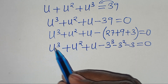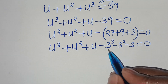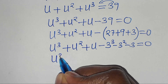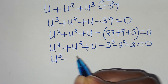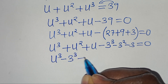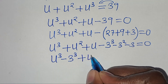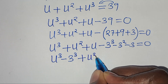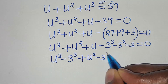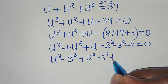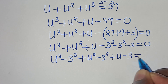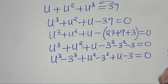We have u³ and 3³, so we group as: u to the power of 3 minus 3 to the power of 3, then plus u to the power of 2 minus 3 to the power of 2, then plus u minus 3. This is equal to 0.